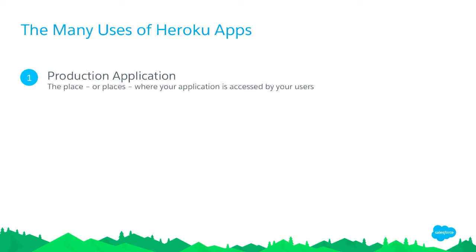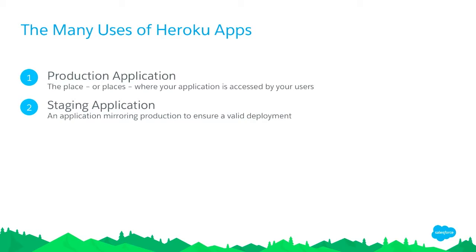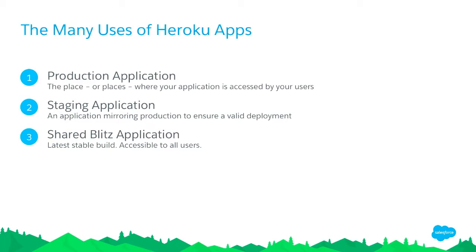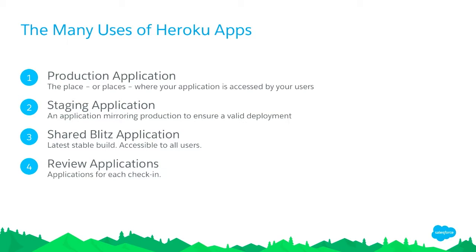What are the different ways you're going to use these Heroku apps? The primary way is as a production application — where the app is being used by all your users. There's also a staging application, a safety valve before deploying to production. A shared application where product managers and business users look at the application or developers do code review. And review applications — these spin up on every single check-in. We can run continuous integration tests on them, and anyone can log in before we've merged into the main branch, giving everyone a chance to review the change before it's part of the main code line.